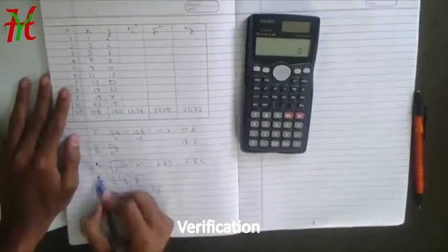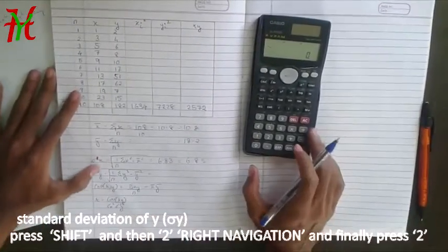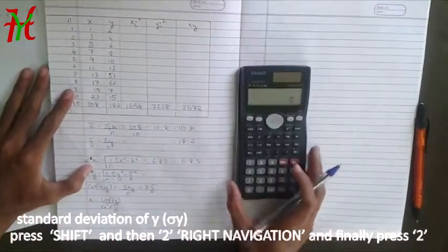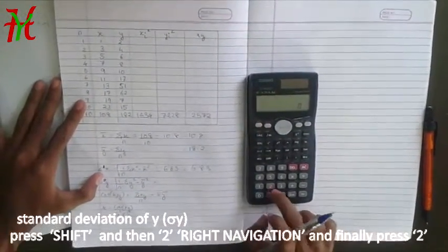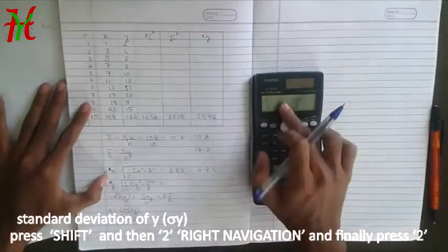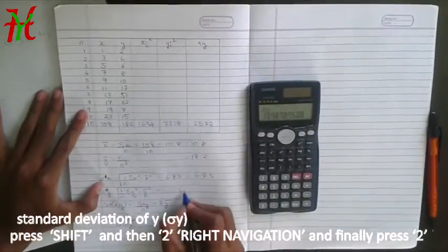Now the same value for sigma Y, which is equal to. Now we're calculating the value of sigma Y using the calculator, shift 2, right navigation, sigma Y, press equal, you get the value as 19.78.